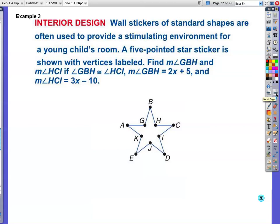Interior design. Wall stickers of standard shapes are often used to provide a stimulating environment for a young child's room. A five-pointed star sticker is shown with the vertices labeled. Find the measure of GBH. So here's GBH. We want to find this. And find HCI, which is this angle over here, if GBH is congruent to angle HCI. So I'm going to put my congruency marking in there. The measure of GBH just happens to be 2X plus 5. And the measure of HCI just happens to be 3X minus 10. And once again, we said these are congruent, so they are equal to each other. So I will set 2X plus 5 equal to 3X minus 10.